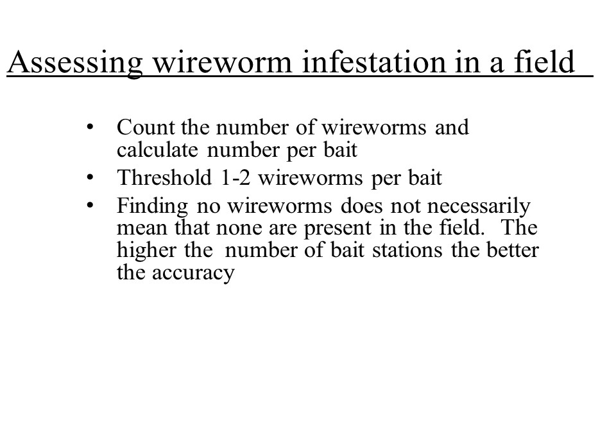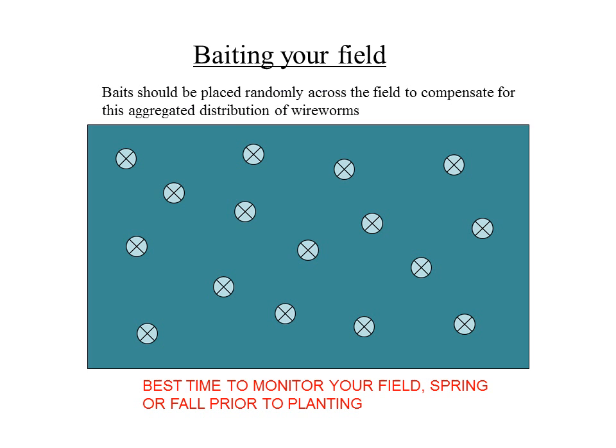If you go too early in the spring you won't find wireworms. If you go too late in the fall you won't find them because they've gone deeper into the ground. And if you haven't put enough baits in your field, you may have wireworms but think you don't. Because of their aggregated distribution, you really need to put baits everywhere in your field in a random distribution. The best time is end of May to June, or in the fall just prior to planting — September is a good time for that.